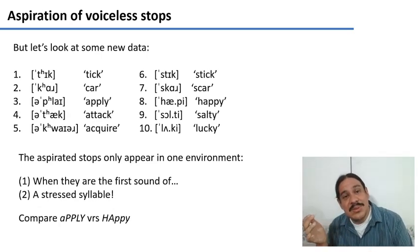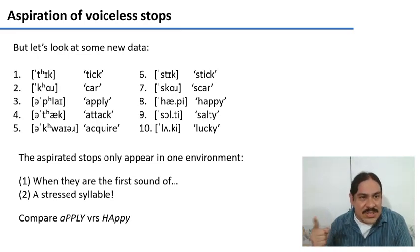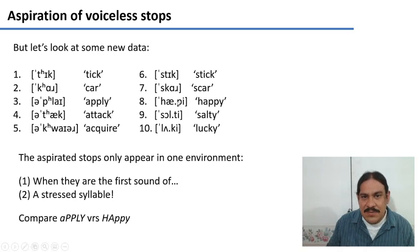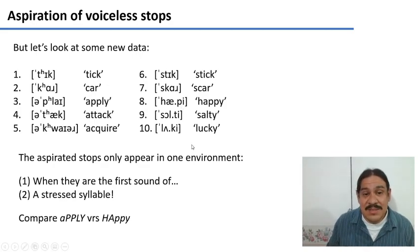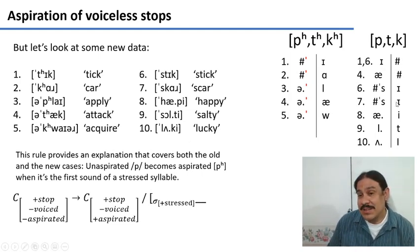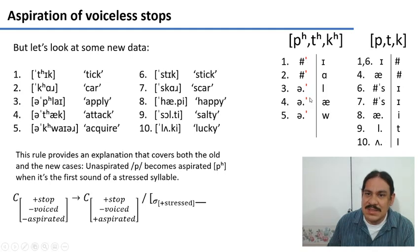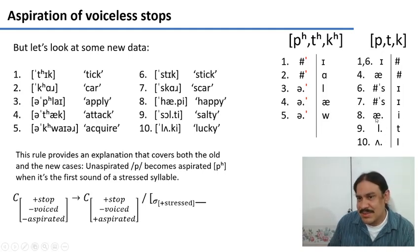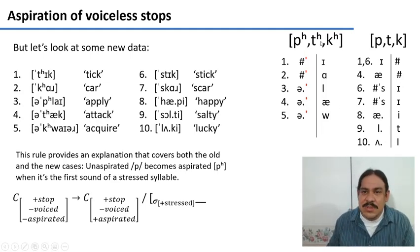The aspirated stops only appear in one environment: whenever they are the first sound of a stressed syllable. For example, in 'apply,' the P is the first sound of the stressed syllable, whereas in 'happy,' the P phoneme is in an unstressed syllable, so it remains unaspirated. The aspirated ones appear in complementary distribution — only at the edge of stressed syllables — while the unaspirated ones have a greater variety of environments: sometimes stressed, sometimes not, sometimes preceded by S.